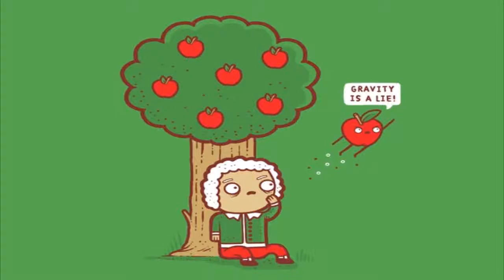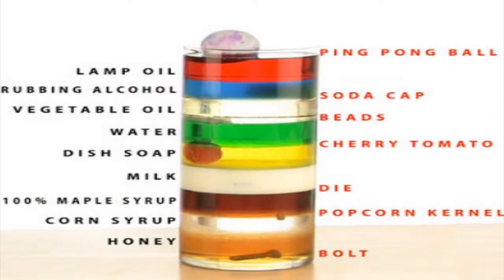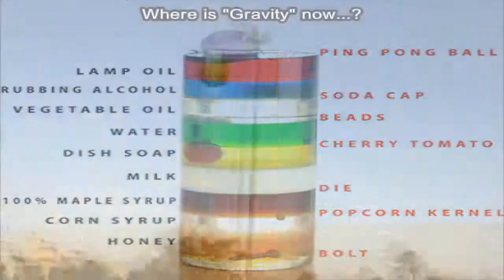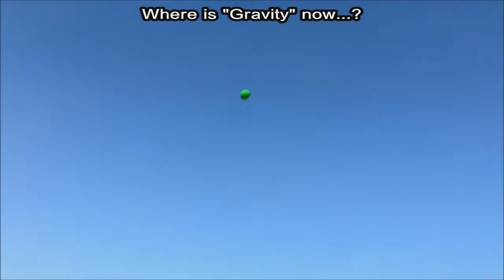Long before the theory of gravity was a glimmer in Newton's imagination, the natural physics of density and buoyancy already perfectly explained why apples fall down. Quite simply, objects fall or rise based on their relative density to the medium surrounding them. Apples fall because they are denser than the air, while helium balloons rise because they are lighter.